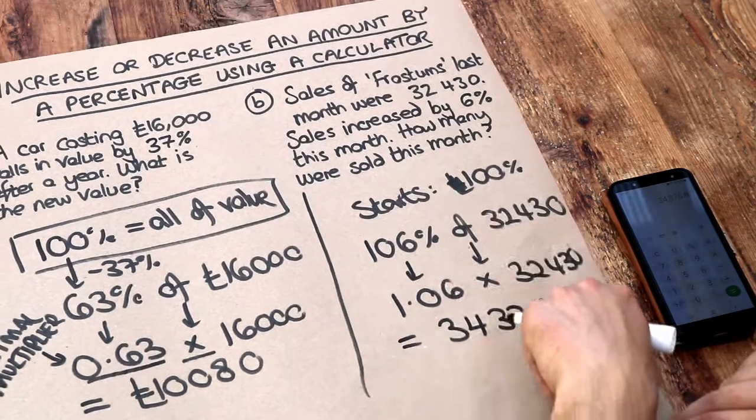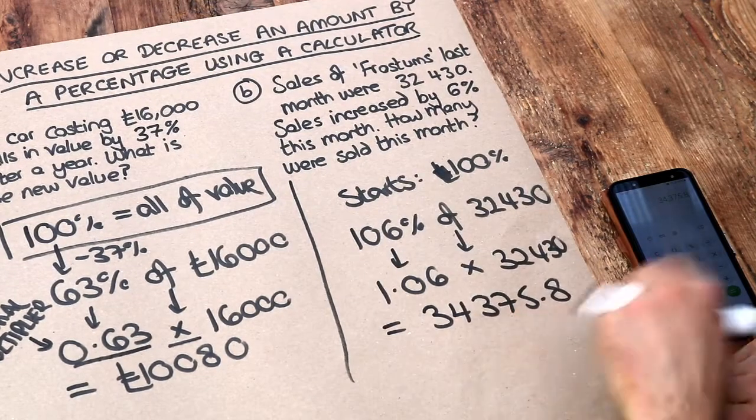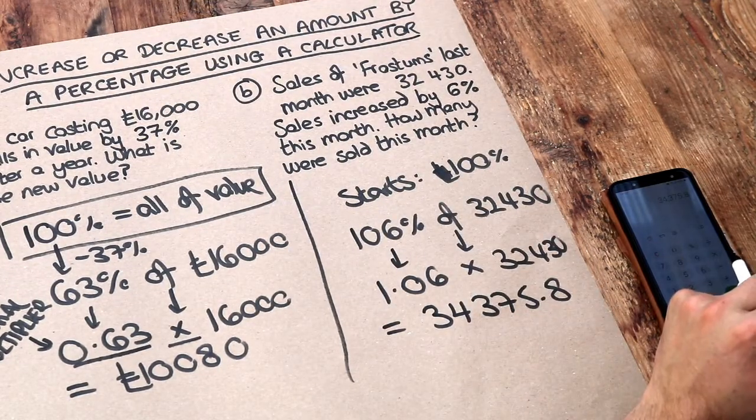And we don't really want a decimal if we're selling a whole number of things. So we'd probably round that to 34,376.